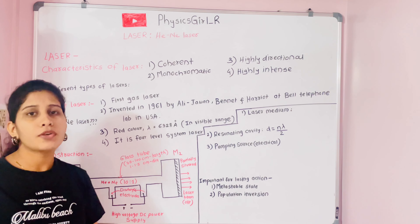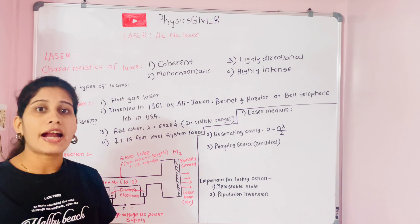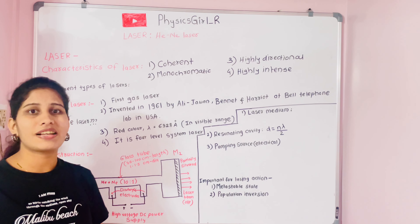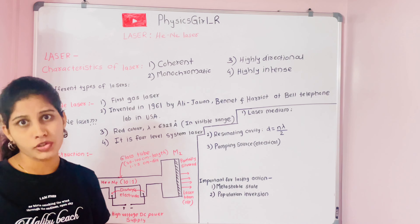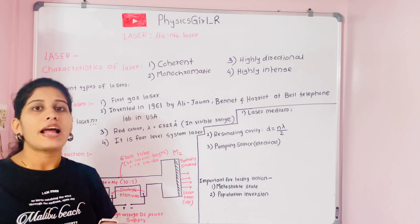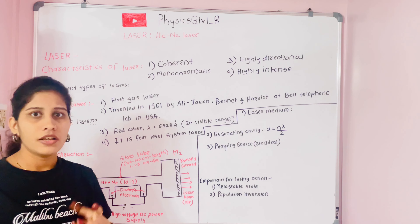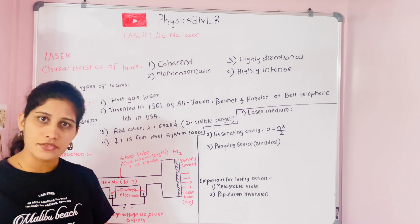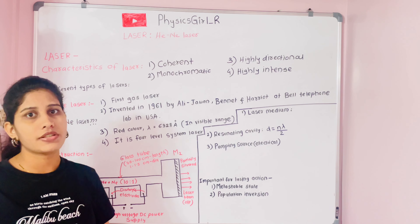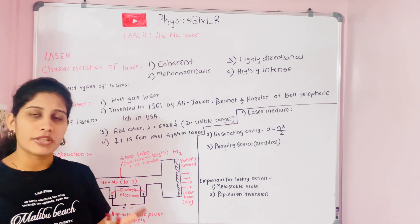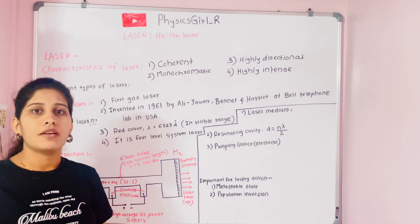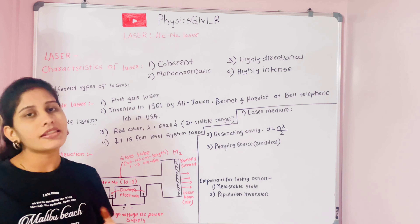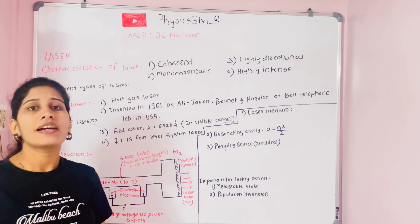There are different types of lasers based on their construction material. If a solid material is used, it is called a solid-state laser. If liquid is used, it is a liquid-type laser. If semiconductor material is used, it is a semiconductor laser. And if gaseous material is used, it is called a gaseous laser.